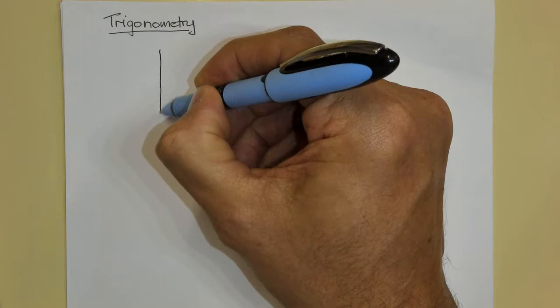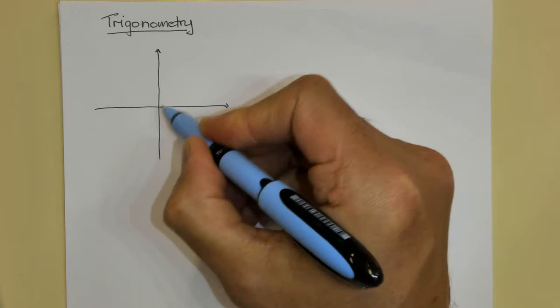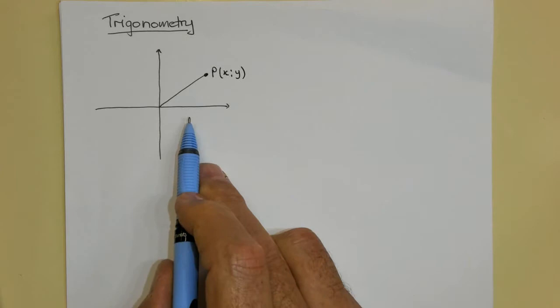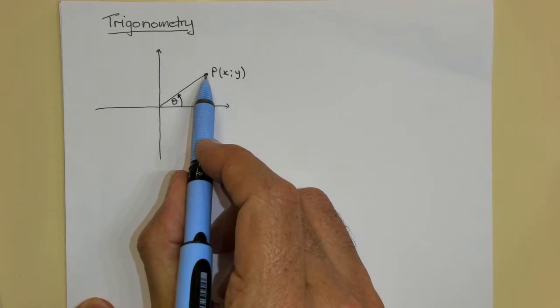I want to talk about reduction formulas and putting angles on the Cartesian plane. Our Cartesian plane has a y and x-axis. An angle is formed by an initial ray and a terminal ray. Point P has coordinates (x, y), and the angle formed is positive, measured anti-clockwise.